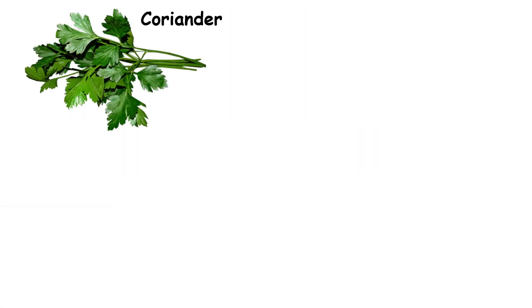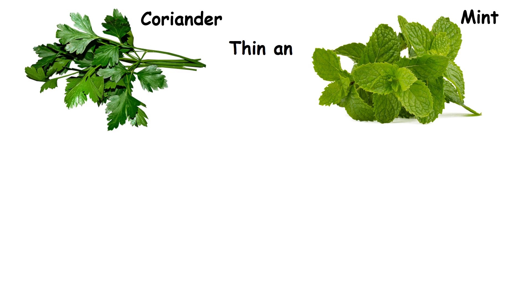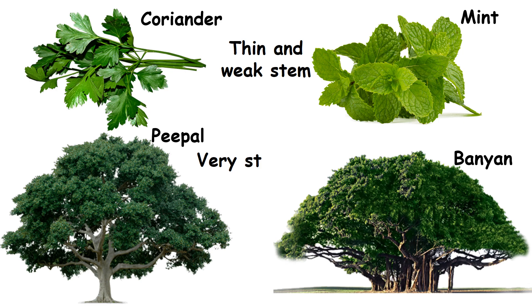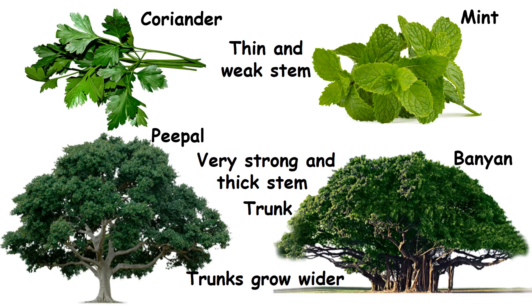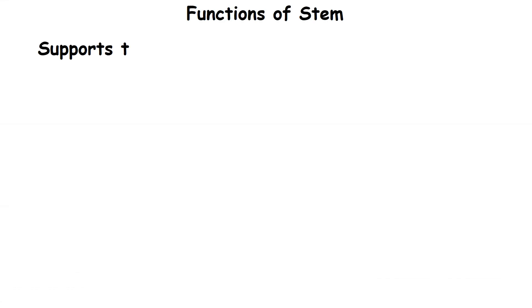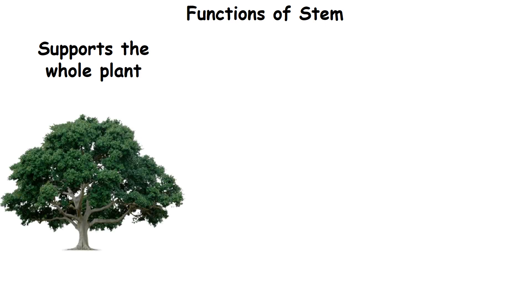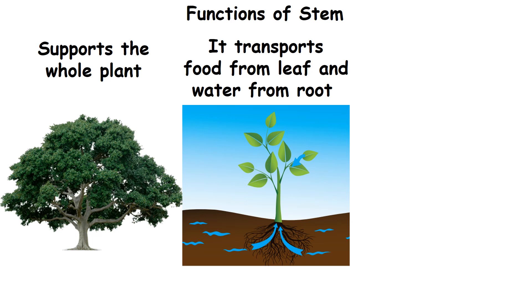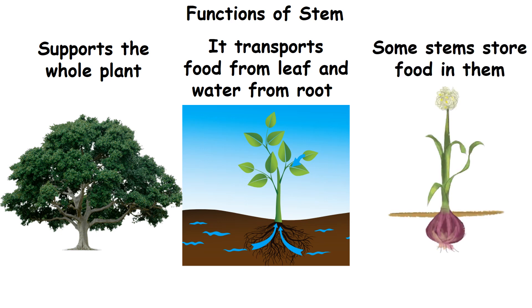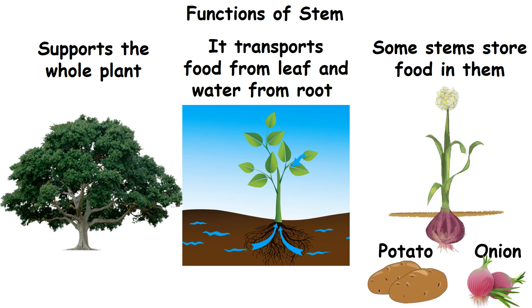Herbs such as coriander and mint have a thin and weak stem. Trees such as peepal and banyan have a very strong and thick stem called trunk. As trees grow older, their trunks grow wider. The stem supports the whole plant and transports food from the leaf and water from the root to various parts of the plant. Some stems store excess food in them. Example: potato and onion.